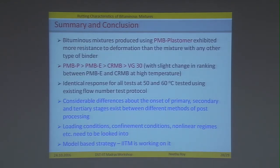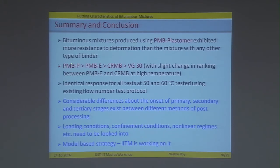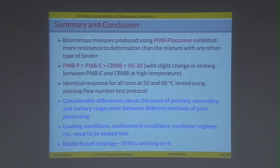To summarize and conclude: bituminous mixtures produced using PMB plastomer exhibited more resistance to deformation than any other mixture made with any other binder. The ranking based on rutting performance is PMB plastomer first, then PMB elastomer, then CRMB, and VG30 — with a slight change in ranking between PMB elastomer and CRMB at high temperatures. There is an identical response at both 50°C and 60°C when tested using the existing flow number test protocol, but there are considerable differences regarding the onset of the primary, secondary, and tertiary stages.